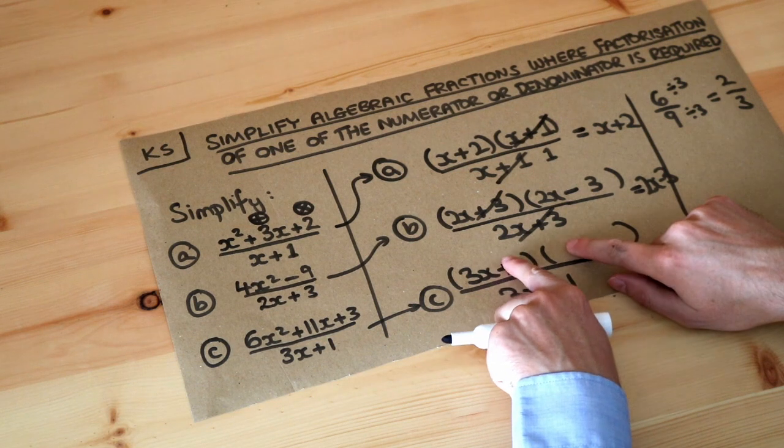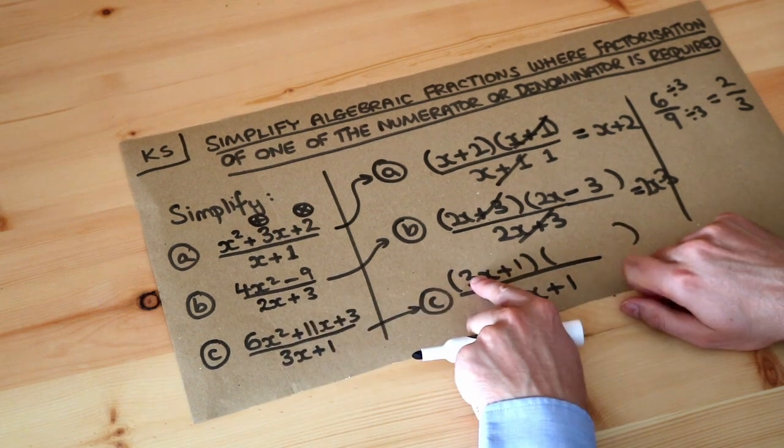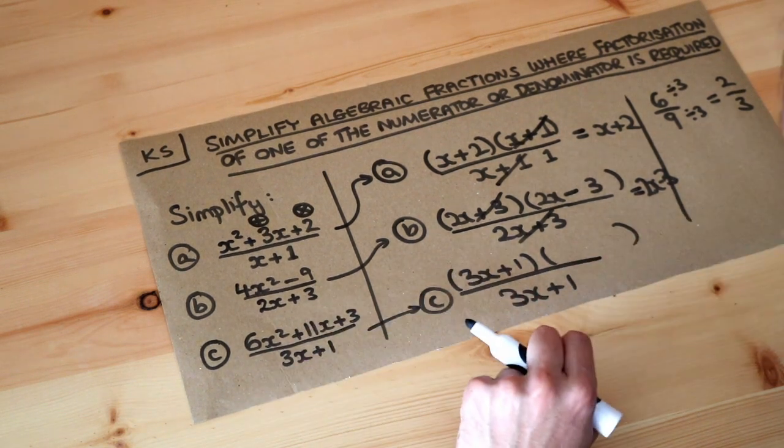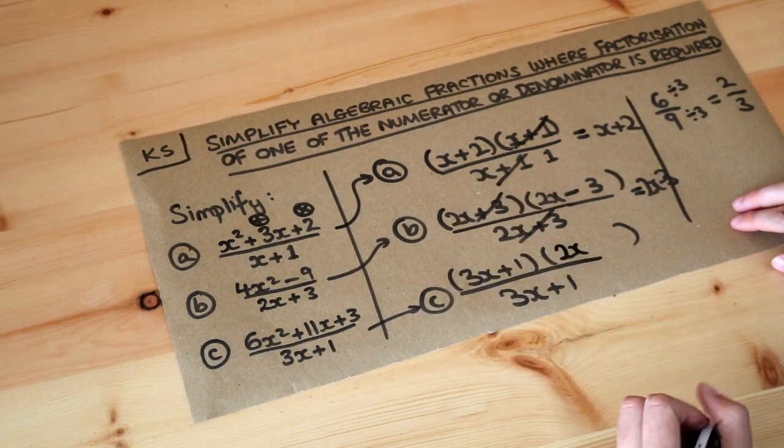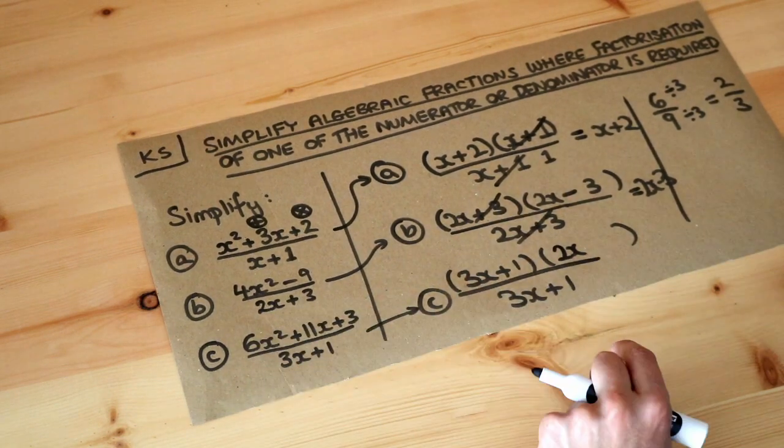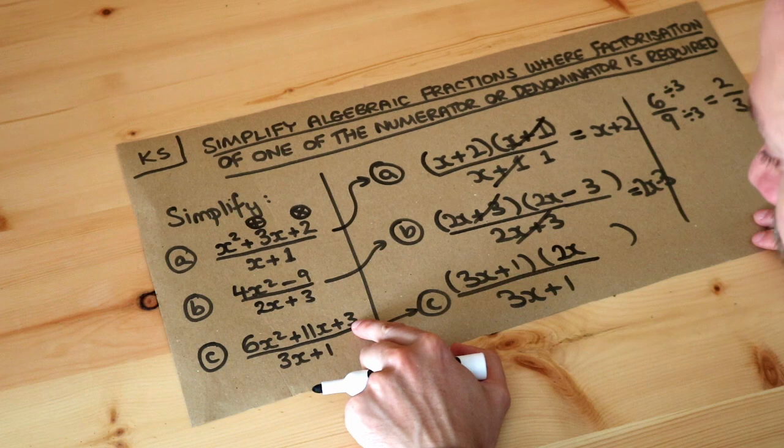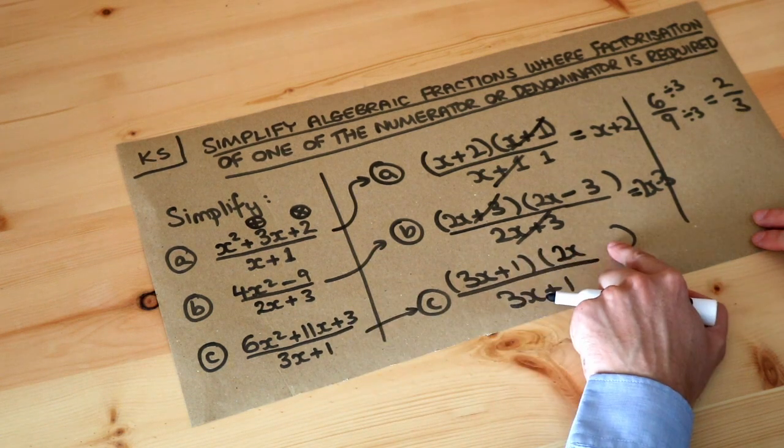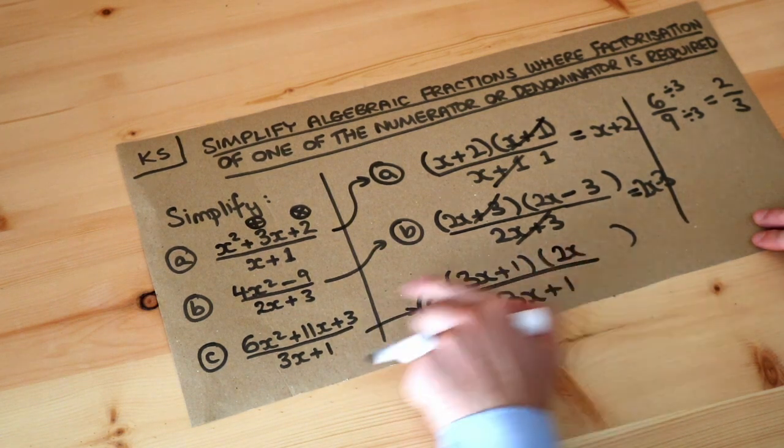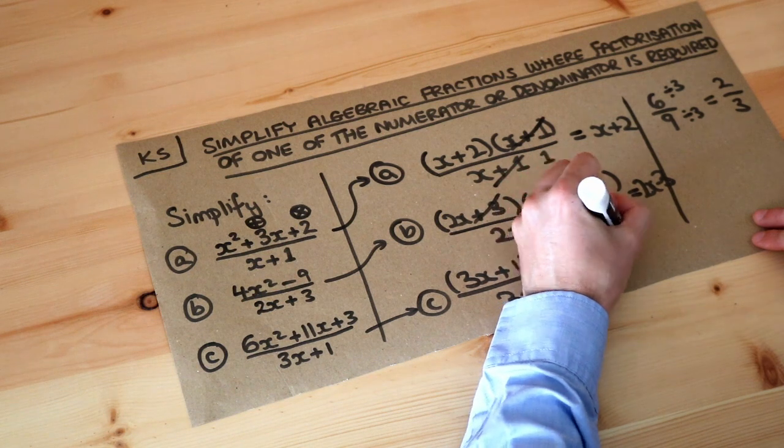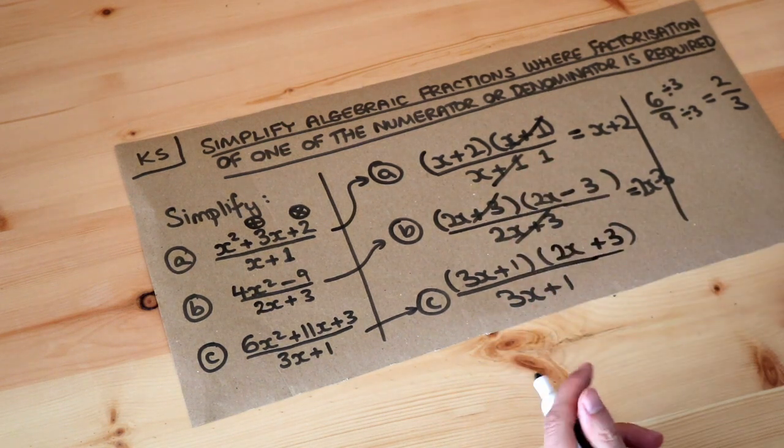So in this expansion, if this expands to give that, 3x times what is going to give the 6x squared? Well, it's going to be 2x, so that's going to give you 6x squared. And then also to get the plus 3, that must be this number times this number in the expansion. 1 times what is 3? Which is plus 3. And then we can check whether this is right.